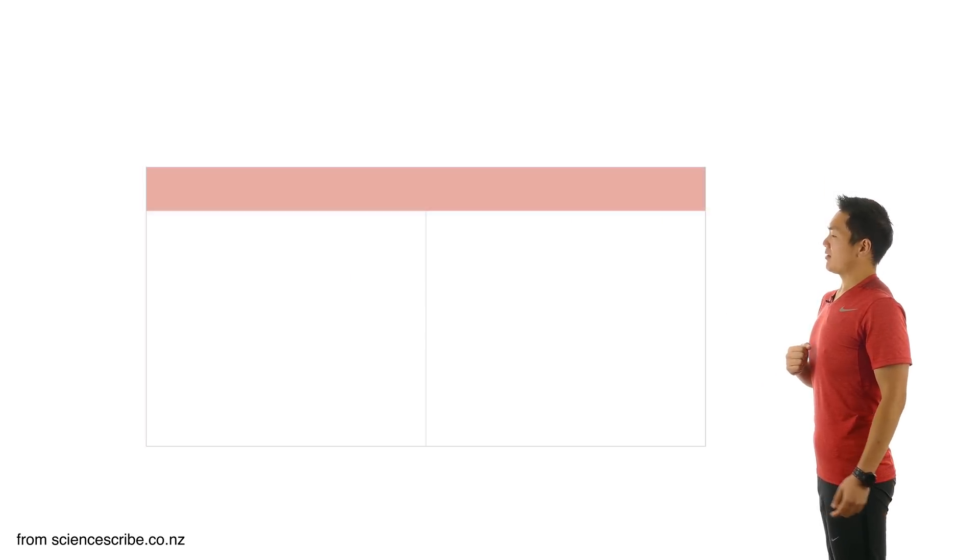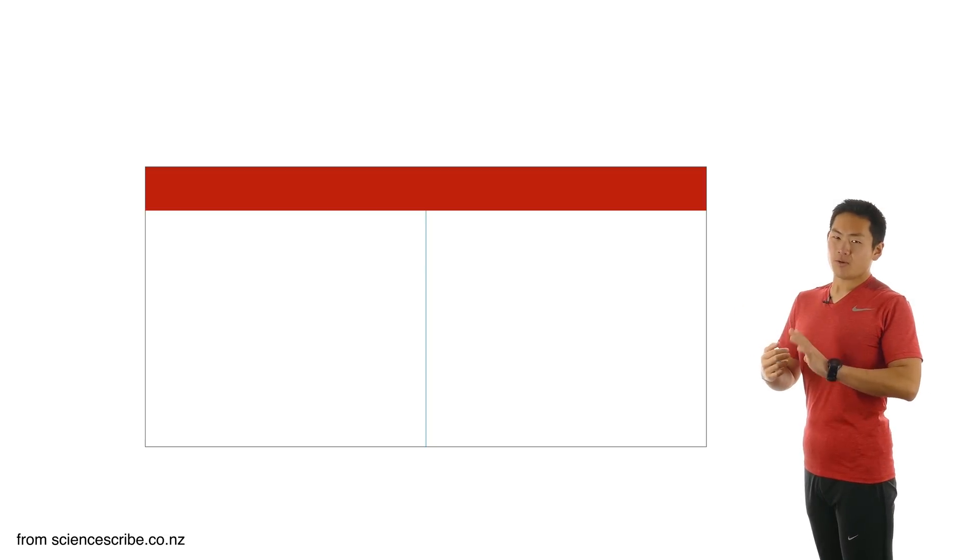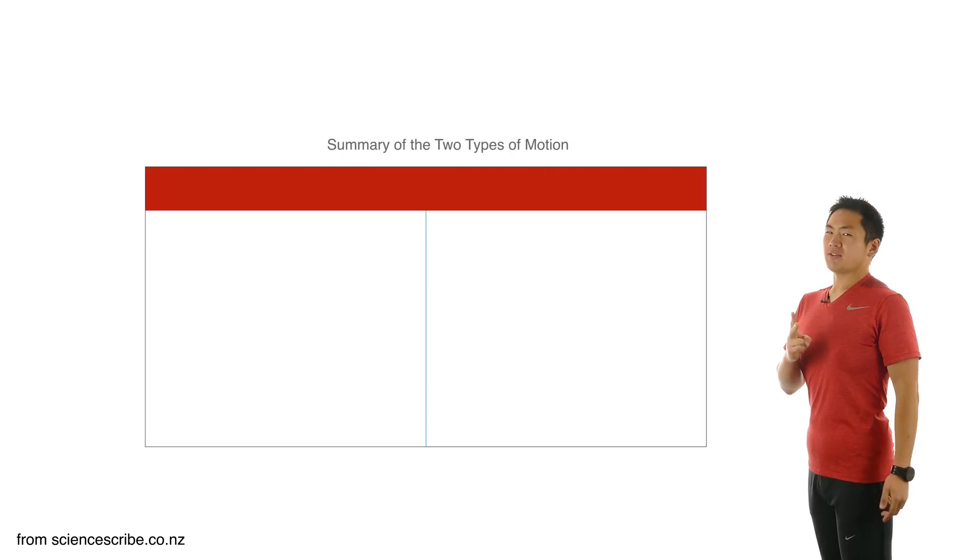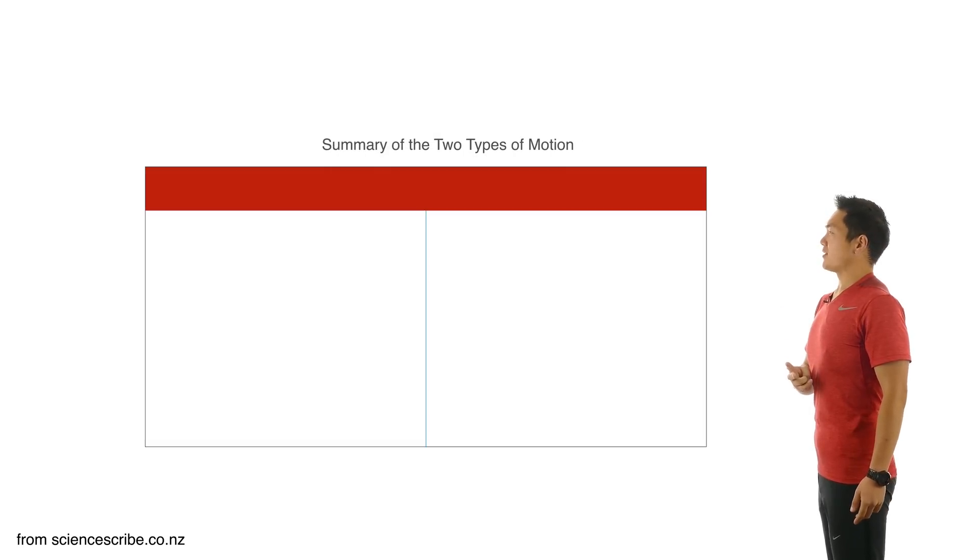To draw my force diagrams, I'm going to refer to this table which I'm about to create. For this table, I'm going to group some key words and key points into the two different types of motion that you end up getting in level 1 physics. So you've got your constant speed and your non-constant speed.